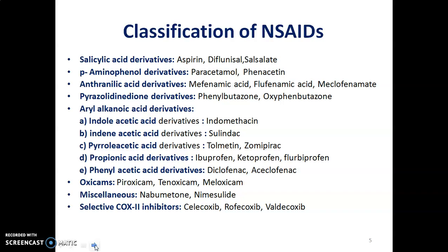Arylalkanoic acid derivatives are further subcategorized. We have indole acetic acid derivatives — example, indomethacin; indene acetic acid derivative — example, sulindac; pyrrole acetic acid derivative — example, tolmetin and zomepirac; propionic acid derivative — ibuprofen, ketoprofen, flurbiprofen; phenylacetic acid derivative — examples are diclofenac and aceclofenac. The next class is oxicams — examples are piroxicam, tenoxicam, meloxicam. Miscellaneous includes nabumetone, nimesulide, and selective COX-2 inhibitors: celecoxib, rofecoxib and valdecoxib.